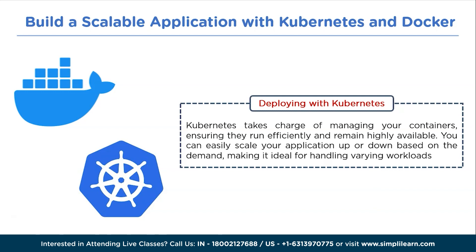Monitoring and logging are crucial in a production environment. Kubernetes integrates with various monitoring and logging solutions like Prometheus and the ELK stack, enabling you to track your application's performance and troubleshoot issues effectively. The benefits of building a scalable application with Kubernetes and Docker include efficient deployment, scalability, high availability, and fault tolerance. In conclusion, by containerizing your application with both technologies, you'll have a highly efficient and scalable application deployment system.